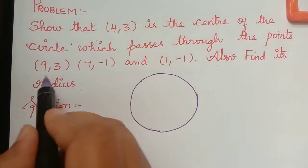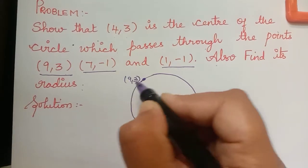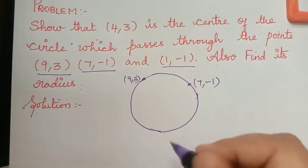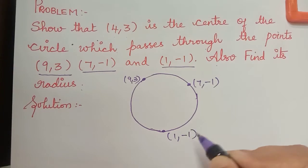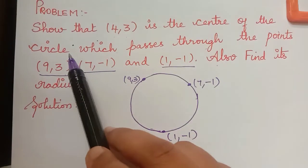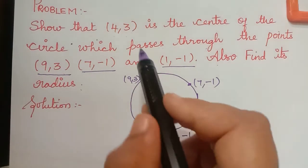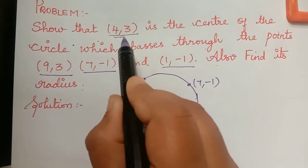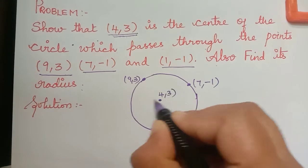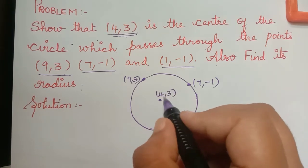We have a circle which passes through these three points. Let us take for example this point is 9 comma 3. This is not geometrically plotted — it is just for your understanding. So we have the three points through which the circle passes, and they are asking us to show that 4 comma 3 is the center of the circle. We have to prove that 4 comma 3 is the center.